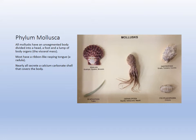Mollusks have five classes. Two are very small: the chitons (Polyplacophora) and the tusk shells (Scaphopoda) — they're rare and encountered randomly. The most common classes are bivalves and gastropods. Cephalopods are arguably the coolest.